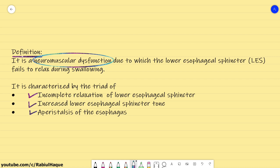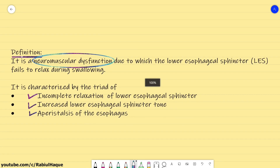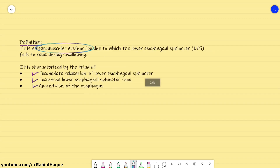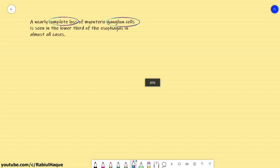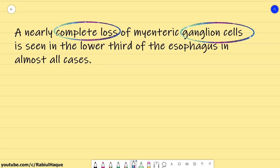Now let's explain this definition. We said that it is a neuromuscular dysfunction. Why did we mention this term? Because nearly complete loss of ganglion cells of the myenteric nerve plexus is seen in the lower one-third of the esophagus in almost all cases of Achalasia. There is complete loss of ganglion cells, and that is why we say it is a neuromuscular dysfunction — there is a problem in neurons, specifically complete loss of ganglion cells of the myenteric nerve plexus.